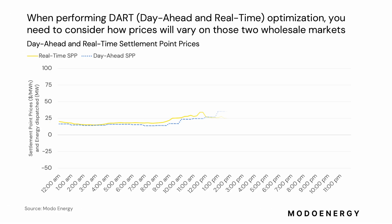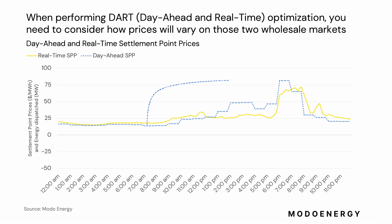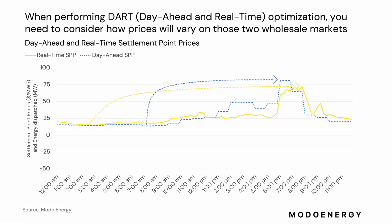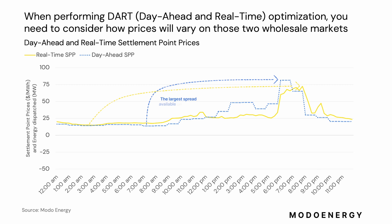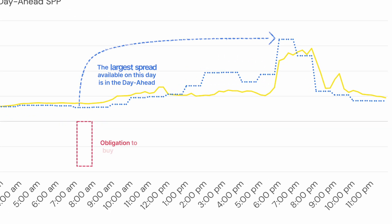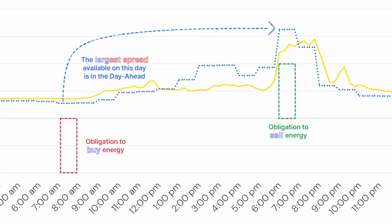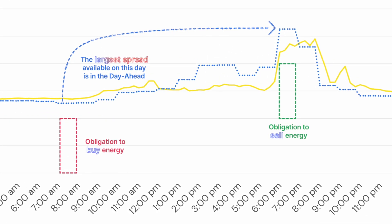That might just mean choosing which of the two markets to operate in. For example, if you think the spread in the day-ahead market will be larger than that of the real-time market, you will simply buy and then sell energy in the day-ahead market.